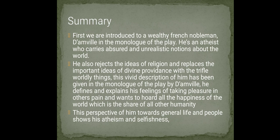First we are introduced to a wealthy French nobleman, D'Amville, in the monologue of the play. He is an atheist who carries absurd and unrealistic notions about the world. He rejects the ideas of religion and replaces divine providence with trifling worldly things. He defines his feelings of taking pleasure in others' pain and wants to hold all the happiness of the world at the expense of humanity, showing his atheism and selfishness.